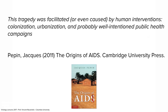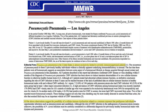I highly recommend this book if you're interested in how AIDS began: The Origins of AIDS by Jacques Pepin. He's a physician who worked for many years in Africa and got ideas about what he thinks happened. He writes that this tragedy, the AIDS epidemic pandemic, was facilitated or even caused by human interventions: colonization, urbanization, and probably well-intentioned public health campaigns. It's a pretty easy and quick read.